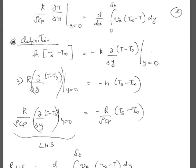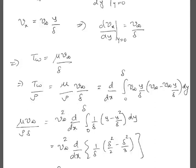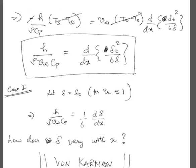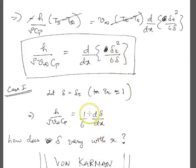There is one simplifying assumption. Case one: life is a little bit simplified when the Prandtl number equals 1. When Prandtl equals 1, the thermal boundary layer thickness delta-T becomes the same as delta. Hence life is simplified and it is easier to solve the differential equation.